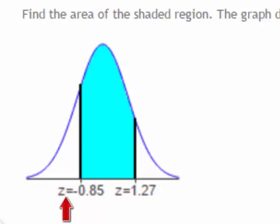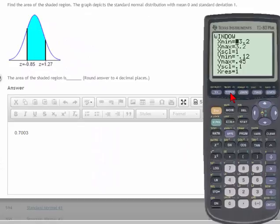First, note that the z-scores that are given are both to the second or hundredth decimal place. With the calculator set so that the window is the window used to graph the normal distribution,